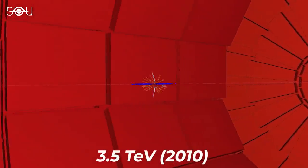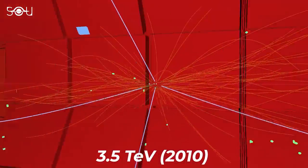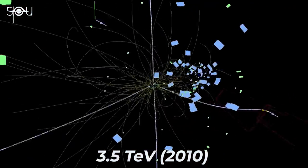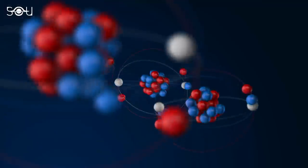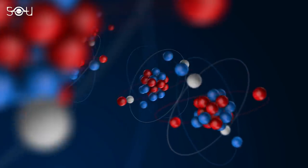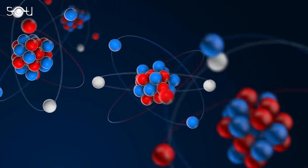The LHC ran its first collisions in 2010 at an energy of 3.5 tera electron volts. Over the years, LHC has made some spectacular contributions to particle physics.